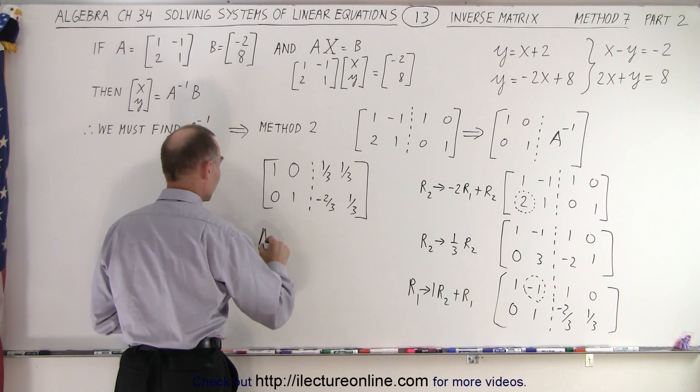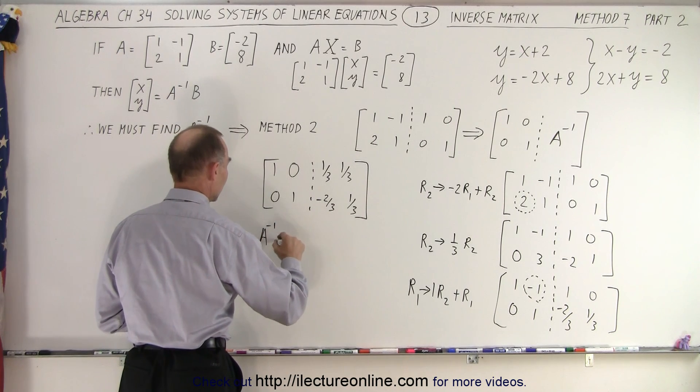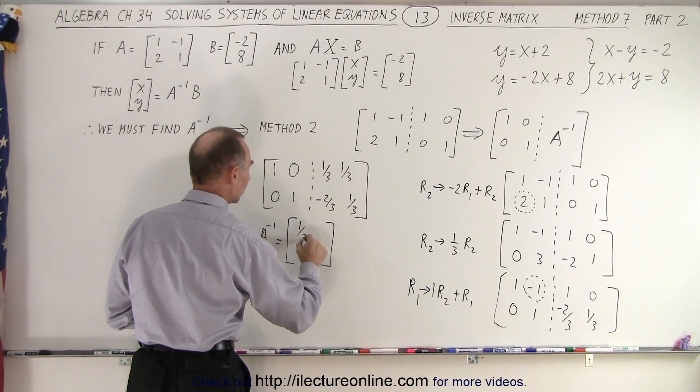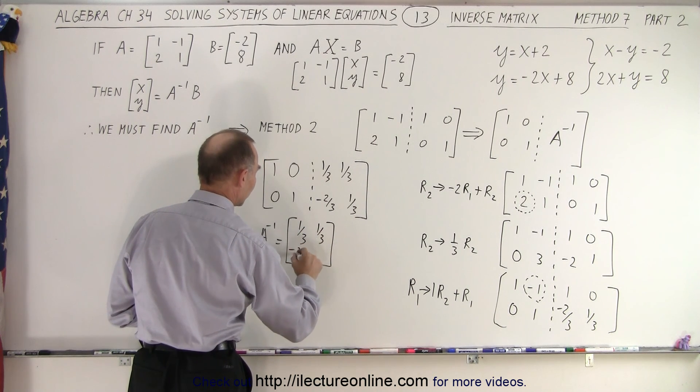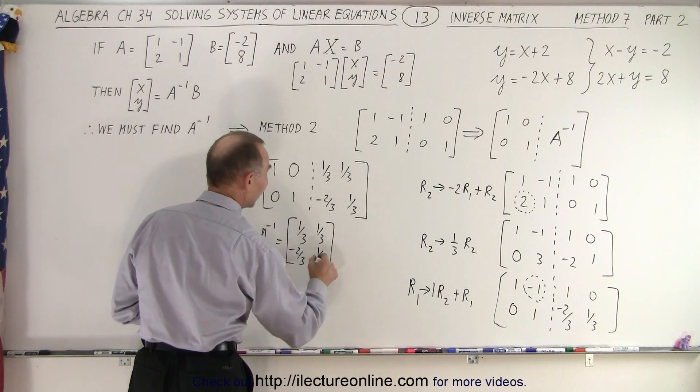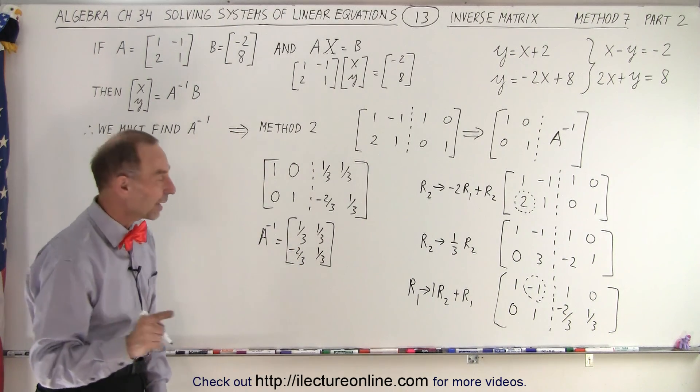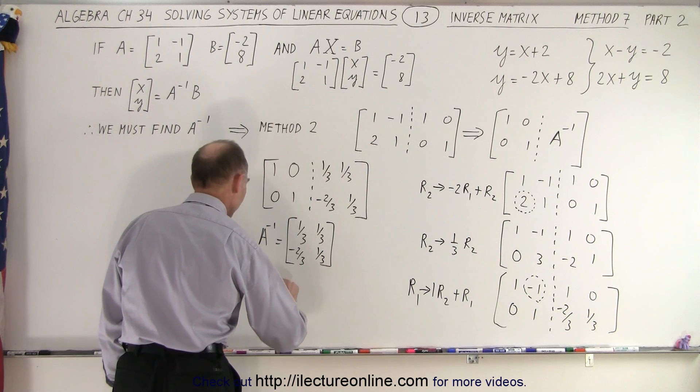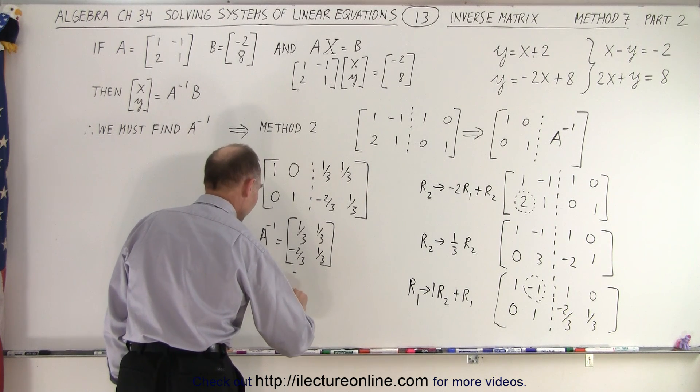So with other words, the inverse matrix of A is equal to what we have in there. Remember, that's equal to 1 third, 1 third, negative 2 thirds, and 1 third. And if you remember, that's exactly what we got on the previous video.